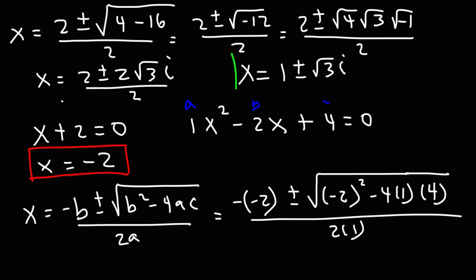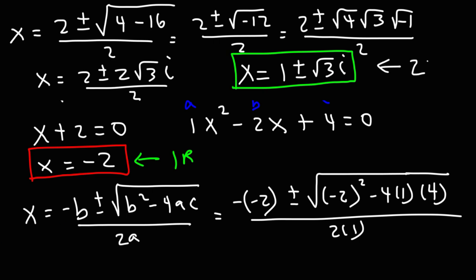So we have a total of three solutions: one real solution x equals negative 2, and two imaginary solutions — 1 plus root 3 times i, and 1 minus the square root of 3 times i.